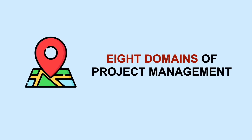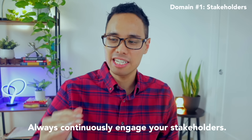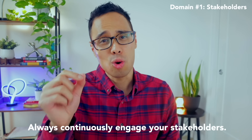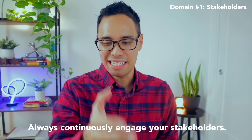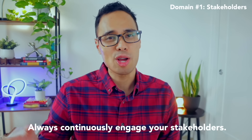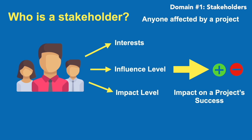Now it's time to dive into the eight performance domains of the PMBOK guide. We just grabbed lunch and we're going to talk about the first performance domain: stakeholders. To achieve your project's desired outcomes, you must continuously engage and grow your relationships with your stakeholders. A stakeholder can be anyone inside or outside your organization who is affected by or may influence your project.